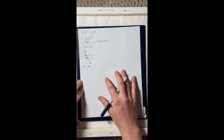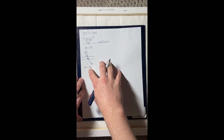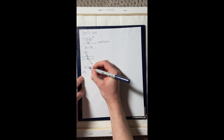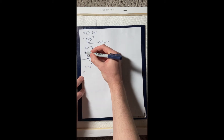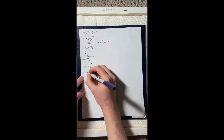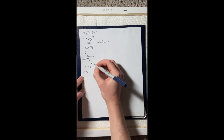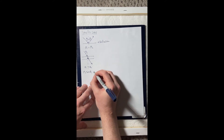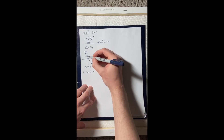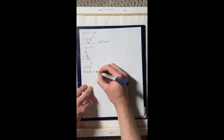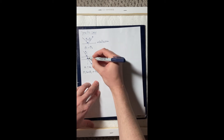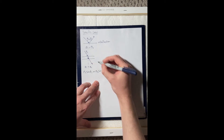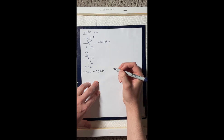Snell's Law itself is this equation: we have some medium n1 in the first space, times sine of angle one, and this equals n2 — whatever the second medium is — times sine of angle two.